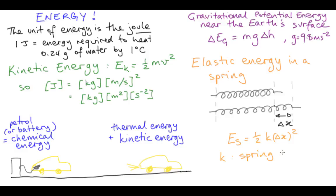k is called the spring constant and it quantifies how stiff the spring is. So now you've heard about a variety of different types of energy and how these are quantified.